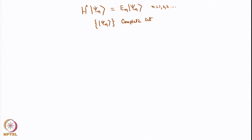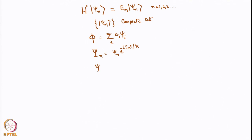If they form a complete set, then any arbitrary function phi can be written as a linear combination of these functions. Furthermore, since these are stationary states because the Hamiltonian itself is time-independent, we can always write psi_n(t) = psi_n * exp(-i E_n t / ℏ). The total wave function can always be written as psi = sum over n of a_n * exp(-i E_n t / ℏ) * psi_n.